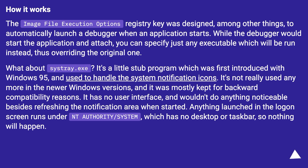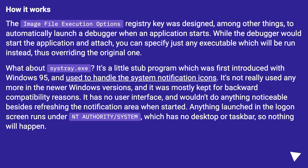How it works: the Image File Execution Options registry key was designed, among other things, to automatically launch a debugger when an application starts. While the debugger would normally start the application and attach, you can specify just any executable which will be run instead, thus overriding the original one. What about Systray.exe?